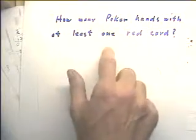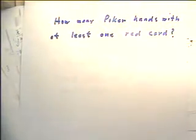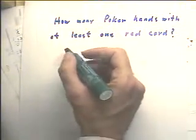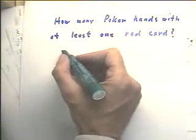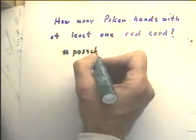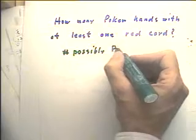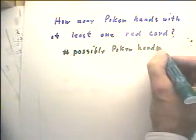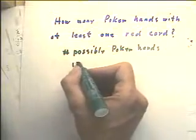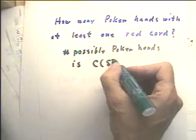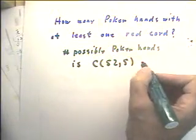How many poker hands are there that have at least one red card? Well, first, how many poker hands are there? The number of possible poker hands, as we saw on a very recent clip, is the number of combinations of five things chosen out of 52.